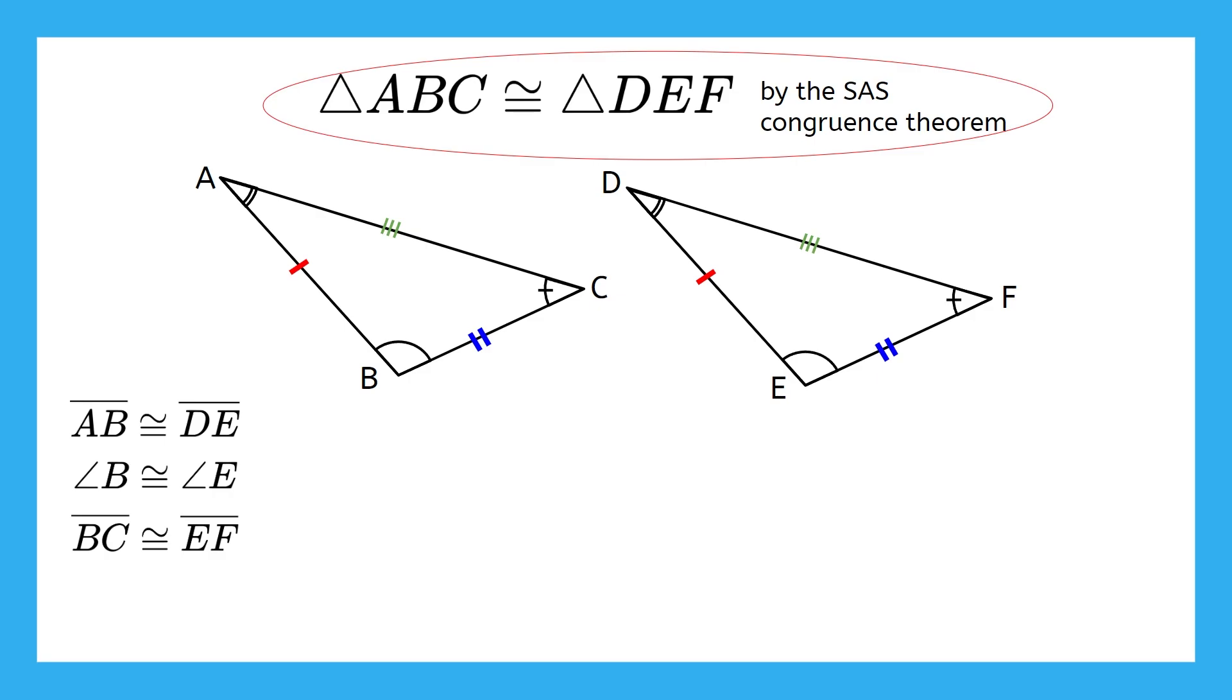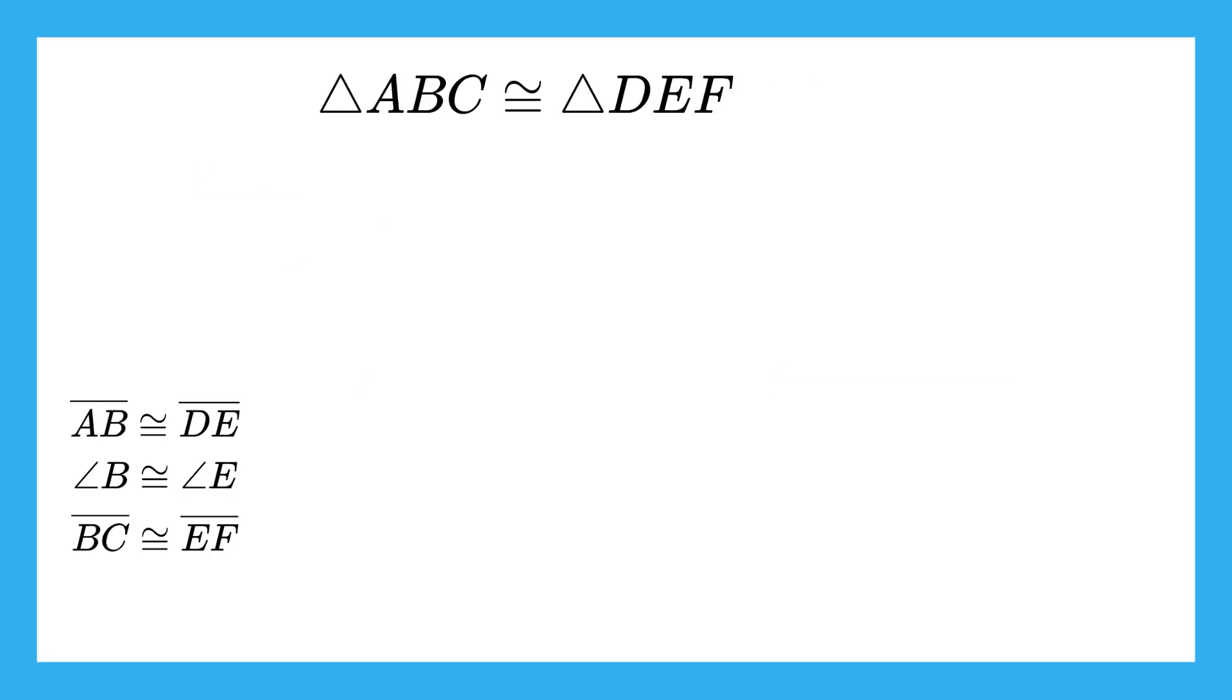Remember how it was super important to write the matching vertices in the same location? The reason is because I should be able to take away the triangles completely and we should be able to write the other three side or angle congruences we didn't already have. So, using only the congruent statement, can you write the other three congruences between the two triangles?